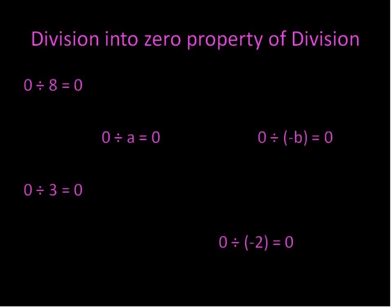A negative variable. You can pretty much divide 0 by anything and you're going to get 0. So that is the division into 0 property of division. 0 divided by something gives you 0.